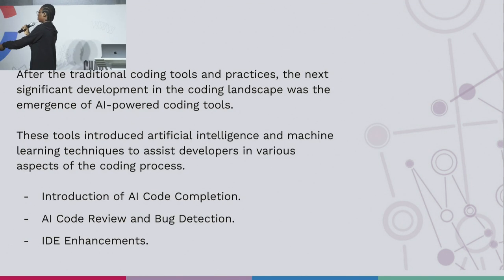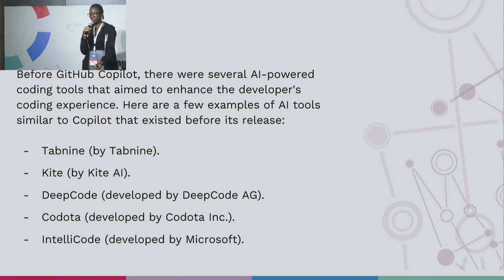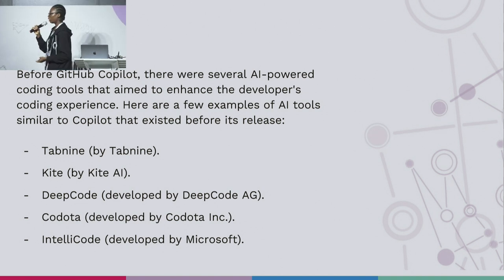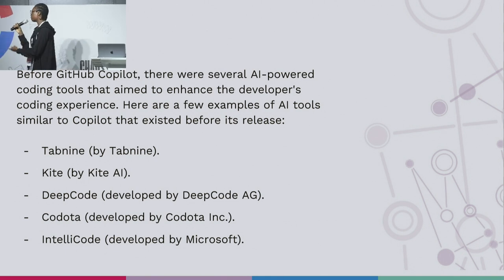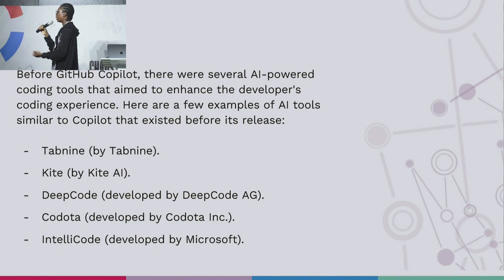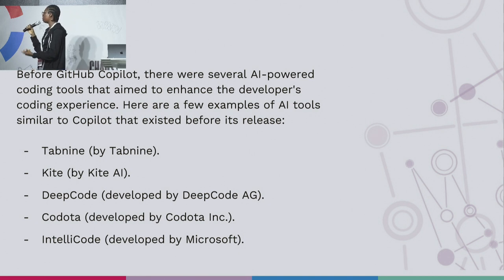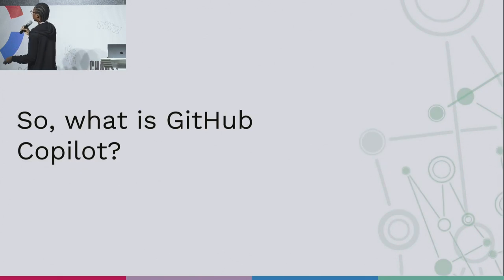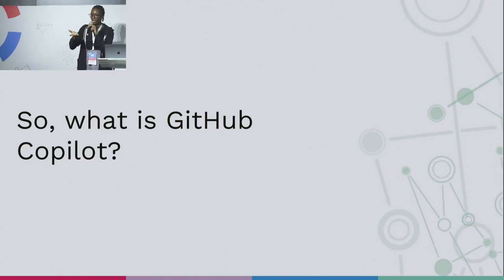There were tools that started coming up because technology was advancing, and then we had several AI-powered coding tools trying to help with productivity, with devs, and time management. We have Tab9 — one of the most popular ones before Copilot. Then we have Kite, developed by Kite AI — Kite is no longer in existence, I think they shut down. Then we have DeepCode, Codata, and IntelliCode. These were all existing before the existence of Copilot.